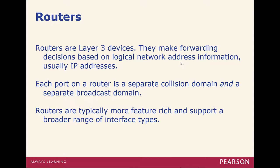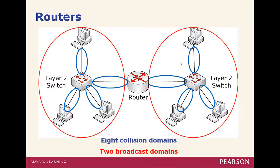Routers are a layer 3 device. They make forwarding decisions based off of IP addresses and perform path selection. Each port on a router is a separate collision domain and a separate broadcast domain. Routers typically are more feature-rich and have better functions and features on each port. Here we have two broadcast domains — one on each side of the router — and each link between a switch is going to be a collision domain.